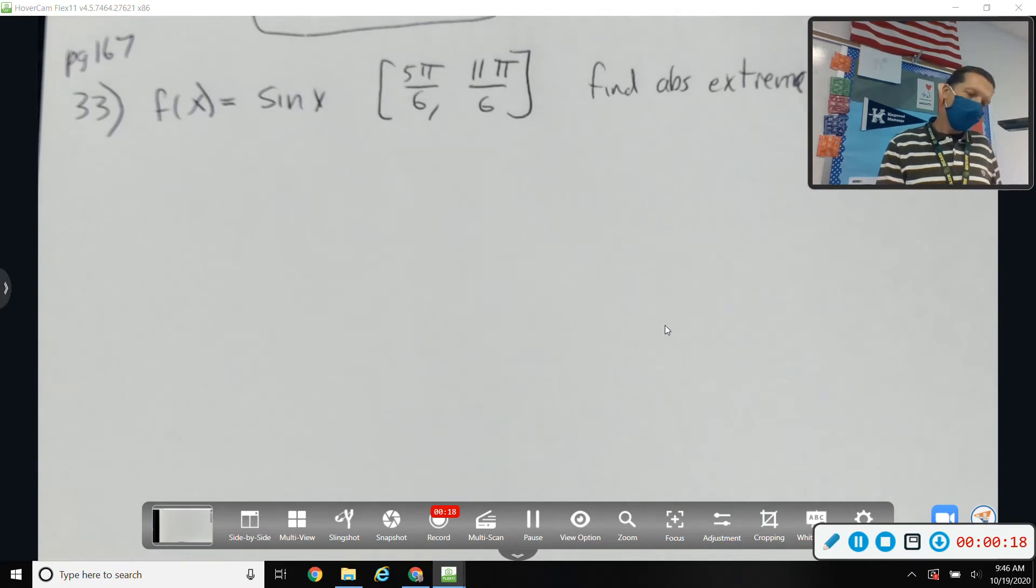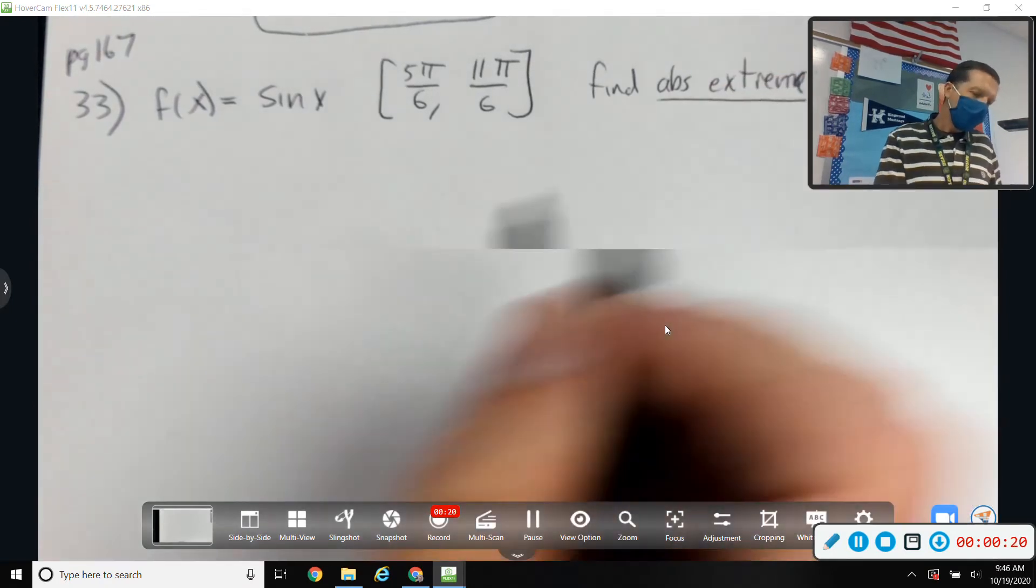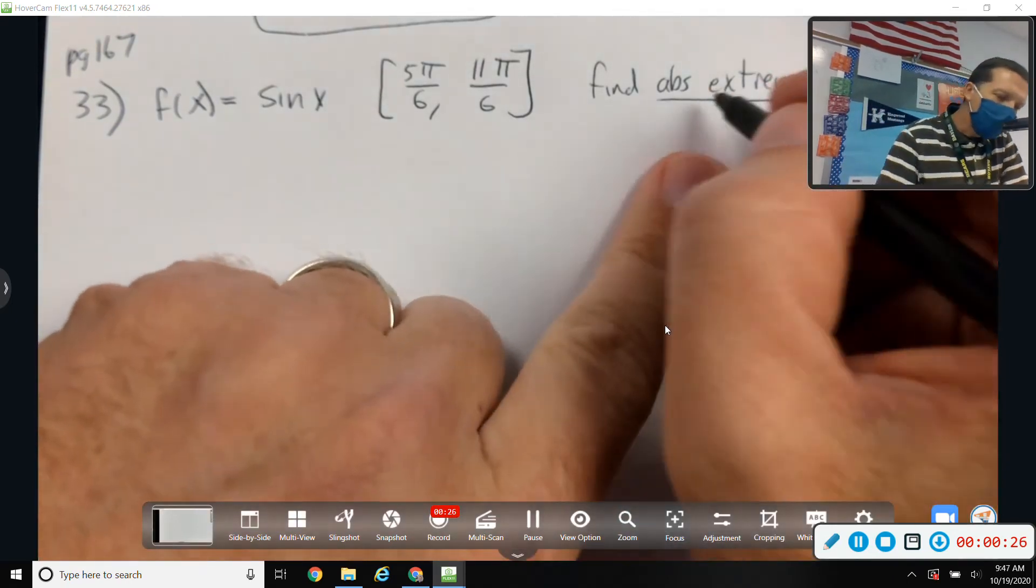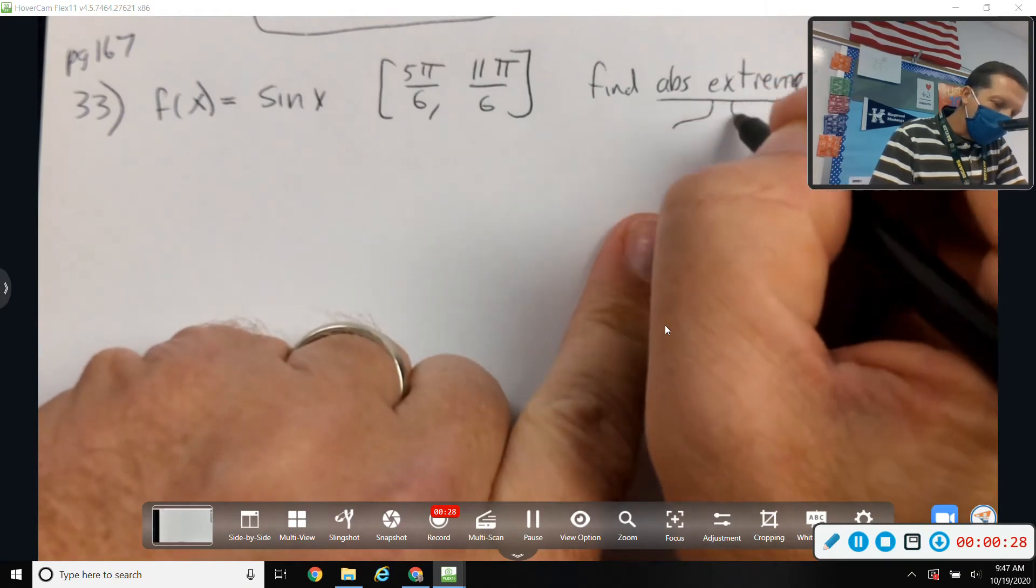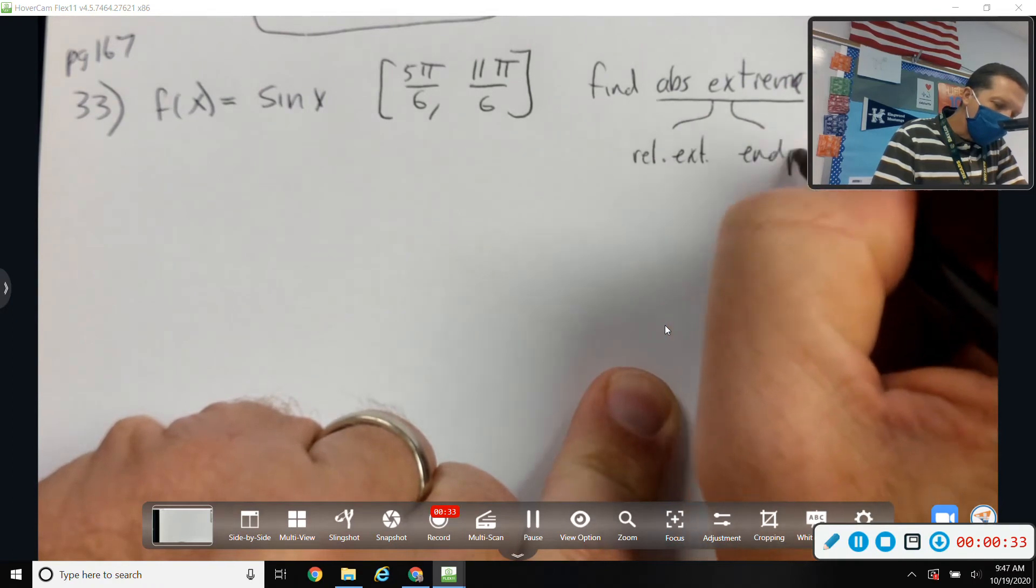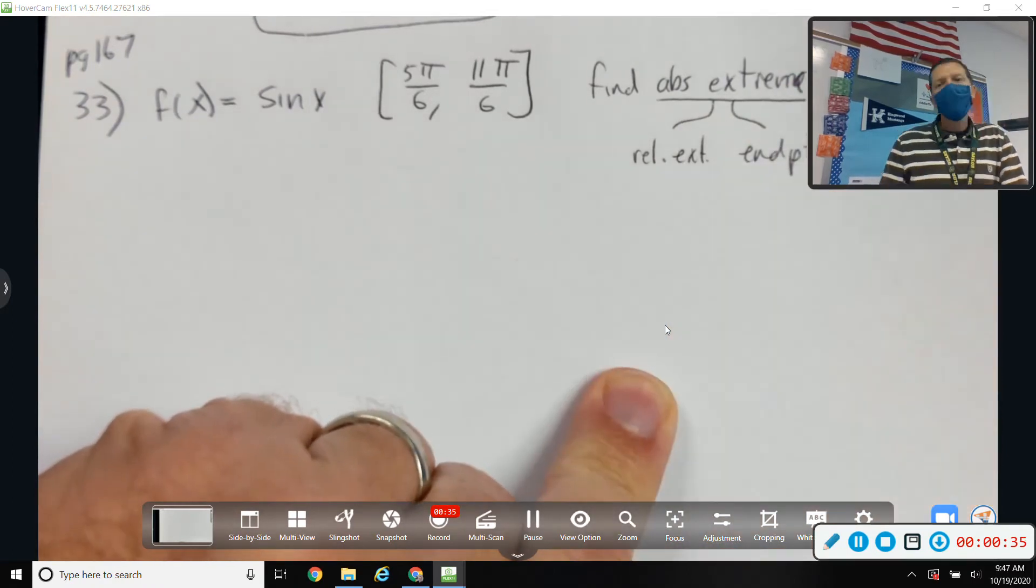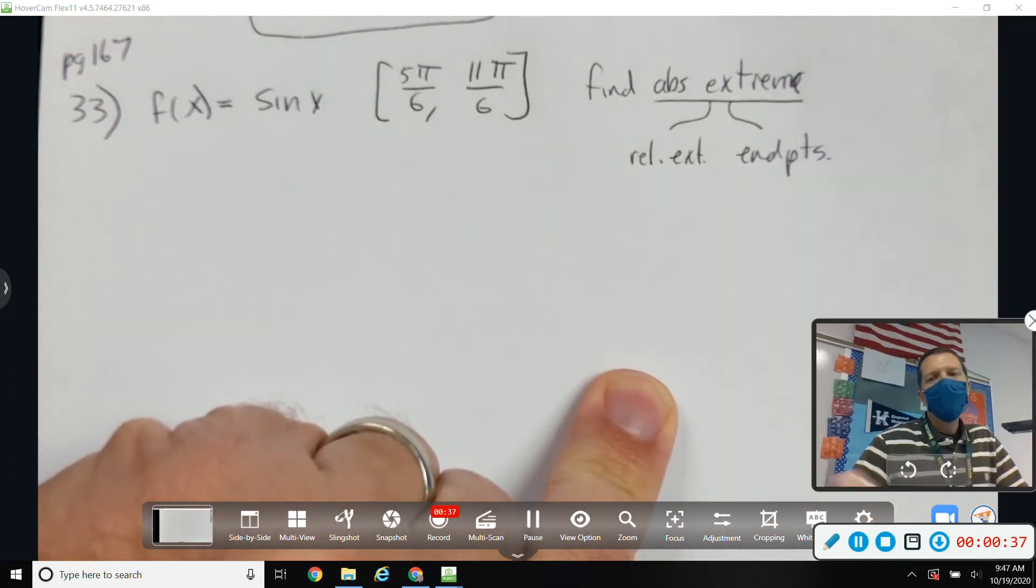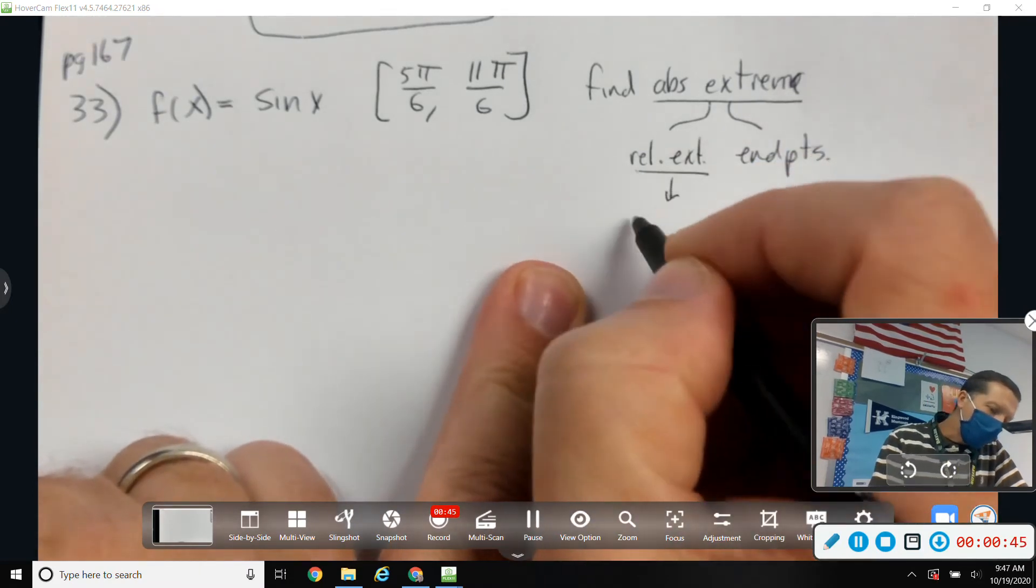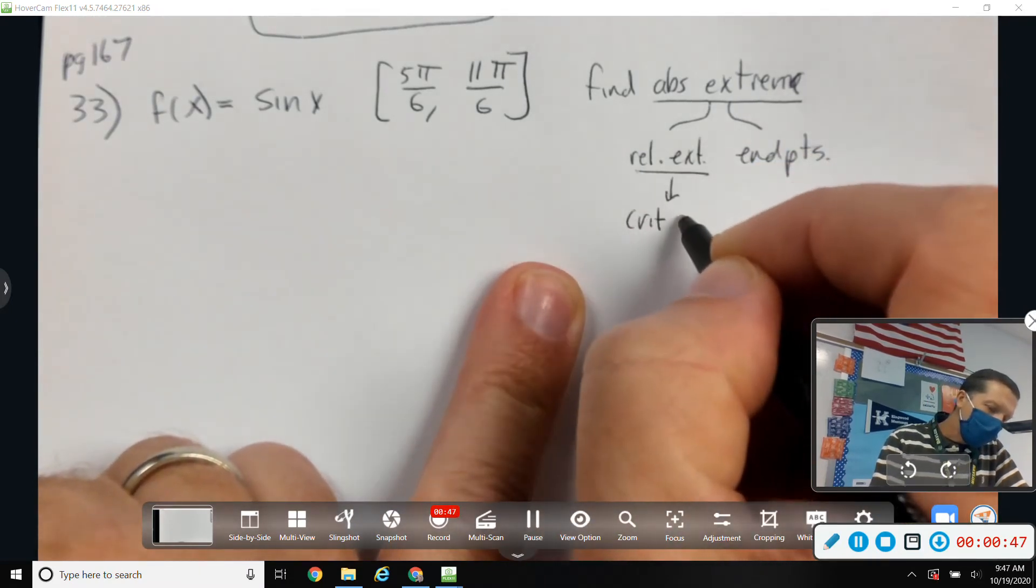Okay, so absolute extrema. Before we get lost in the details of taking derivatives and setting them to zero and all that stuff, I need to check the relative extrema and check the endpoints, because those are the places where I might have an absolute extrema. The relative extrema I get from the critical points.